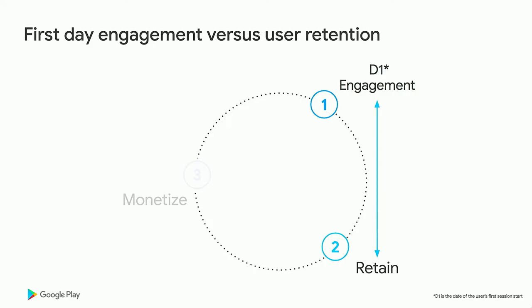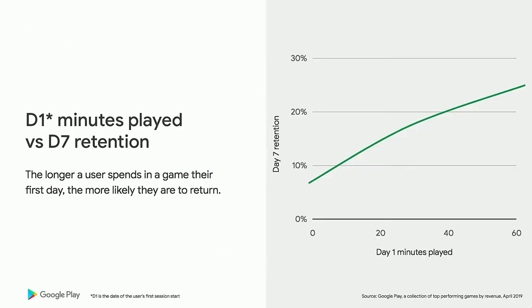First day engagement is especially important. We're going to look at two relationships on the player's first day, starting with games data. The first relationship is the length of time a new user engages on their first day versus the percentage of those users who come back seven days later. We're using time as an apples-to-apples comparison since onboarding differs across titles. The plot for top games on Google Play shows the trend: the longer a user spends in the game on their first day, the more likely they are to return. The longer someone is spending in your title on the first day, the more entertained they are and the more likely they are to return.